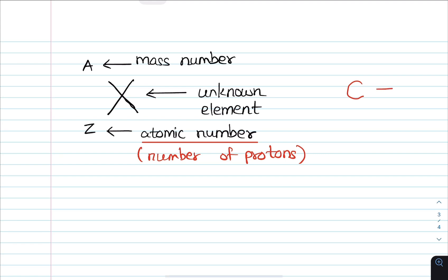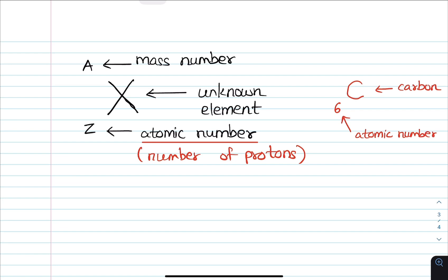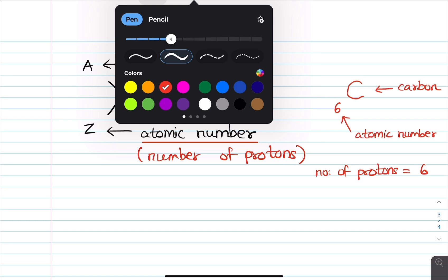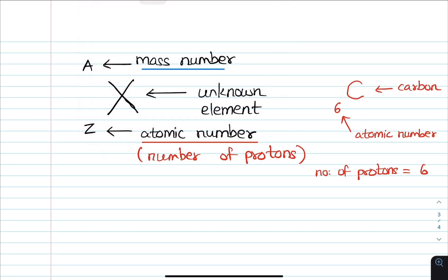Carbon — the atomic number of carbon is 6. We represent 6 as the atomic number. So 6 is actually the atomic number. Lone 6 will now be the atomic number, which means the number of protons is 6.